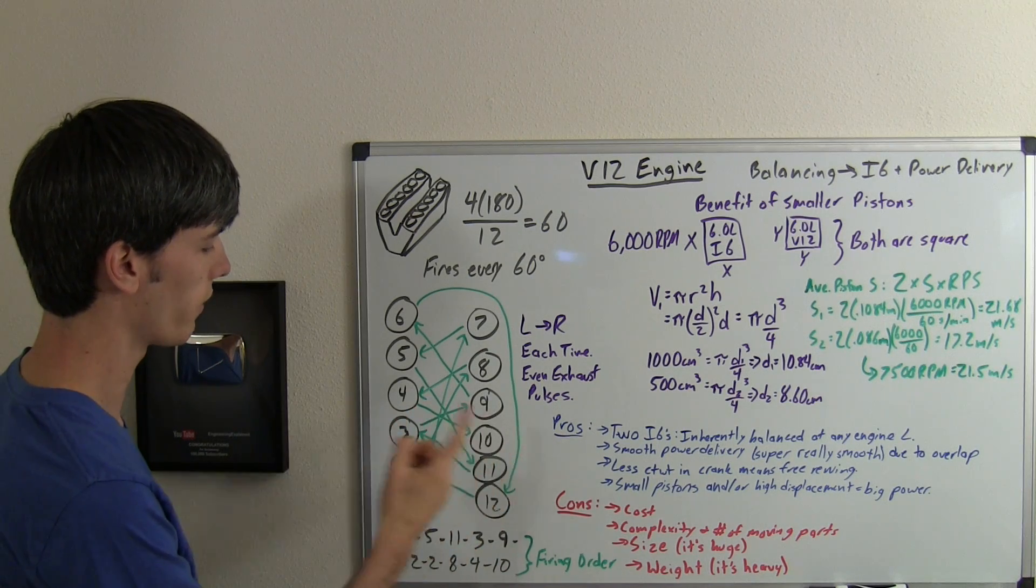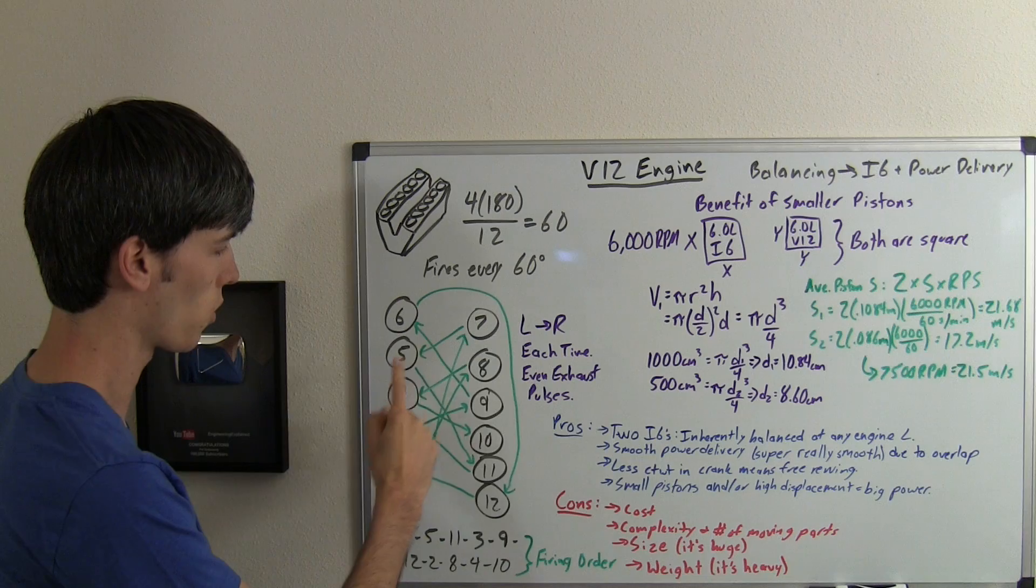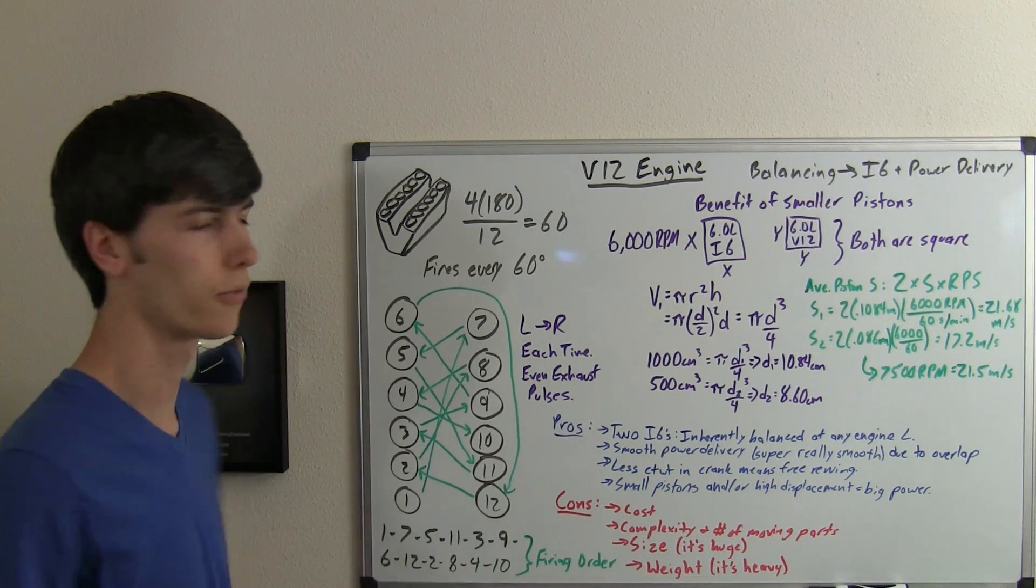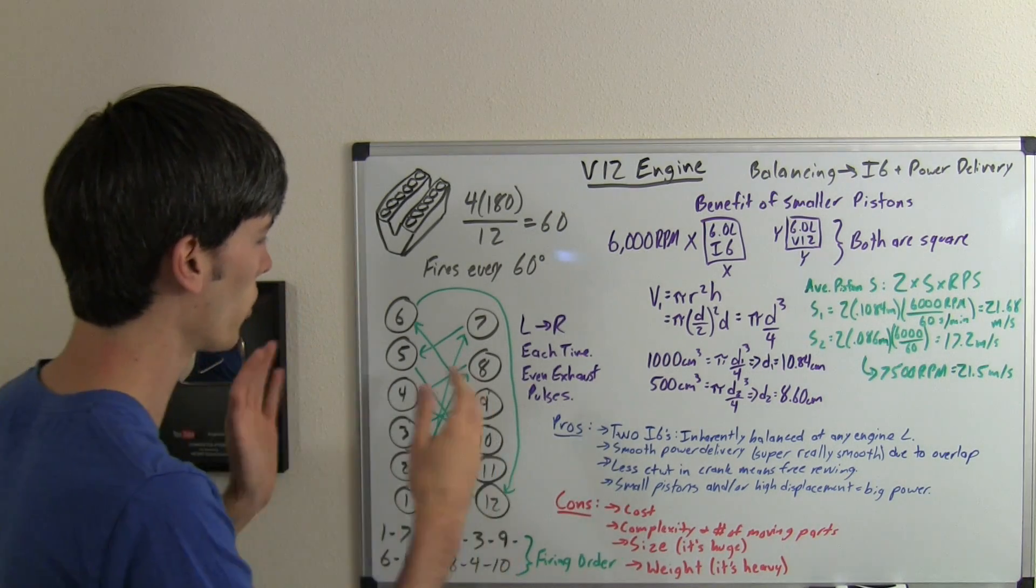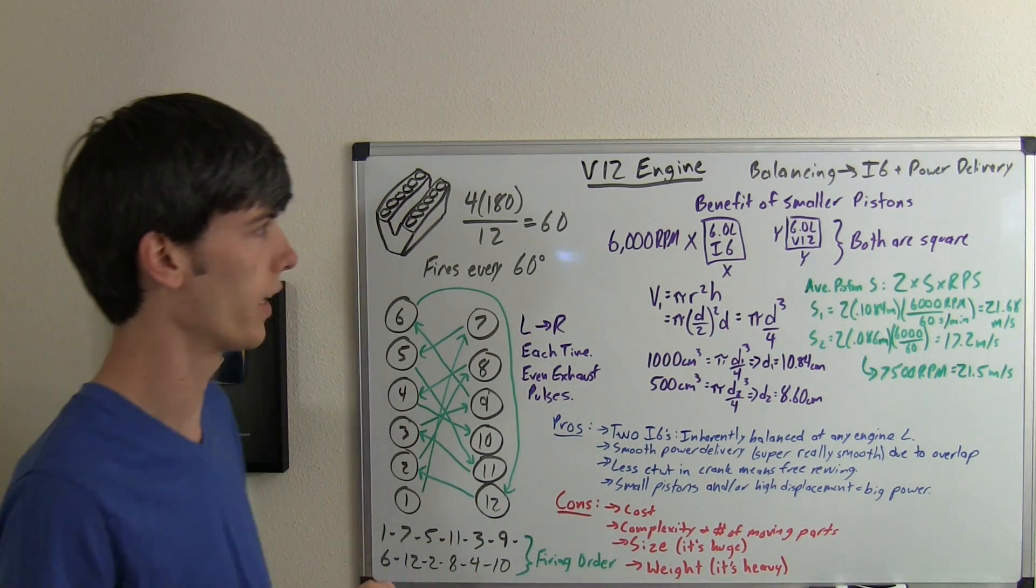So the firing interval, 1, 7, 5, 11, 3, 9, 6, 12, 2, 8, 4, 10. And you'll notice that goes back and forth each time, so that gives it that smoothness and keeps an even exhaust pulse on both sides.